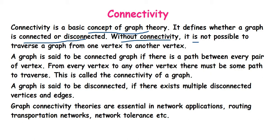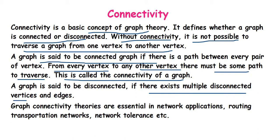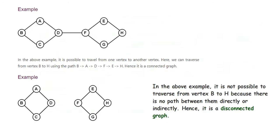Without connectivity, it is not possible to traverse a graph from one vertex to another vertex. A graph is said to be connected if there is a path between every pair of vertices — that means from every vertex to another vertex, there must be some path to traverse. This is called connectivity of a graph. A graph is said to be disconnected if there exist multiple disconnected vertices and edges. Graph connectivity theories are essential in network appliances, routing, transportation networks, and network tolerances.